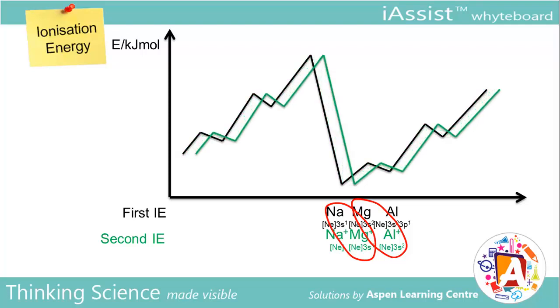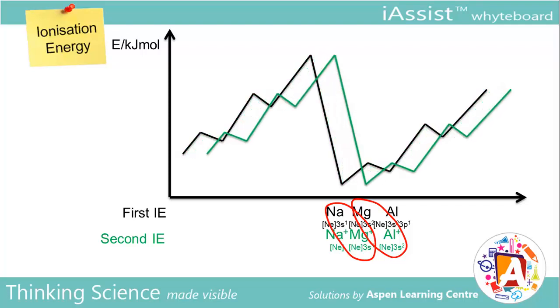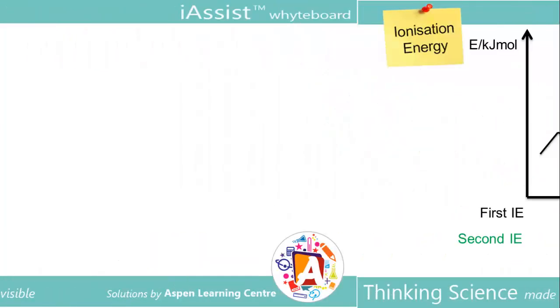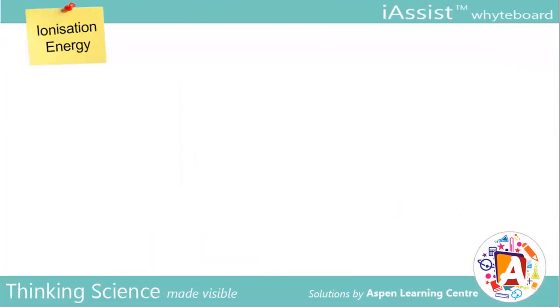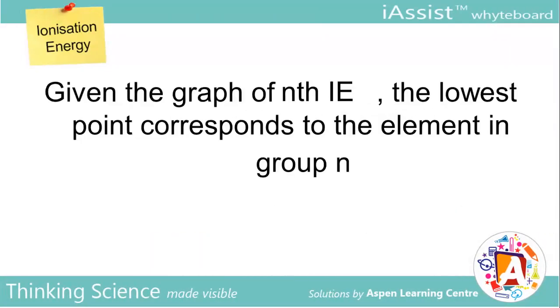Hence, for the second IE graph, the lowest point on the graph represents the element in group 2. Thus, given the graph of the nth IE, the lowest point of the graph corresponds to the element in group N.